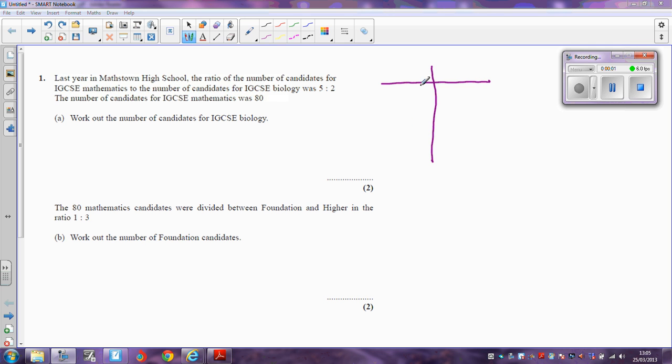For questions like number one, I sometimes find it easier to make a little table. You're told the ratio of the number of candidates for maths and biology is 5 to 2. I'm going to put maths there and biology there. I know the ratio of maths to biology is 5 to 2.